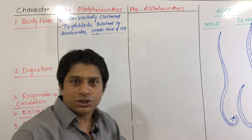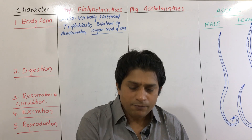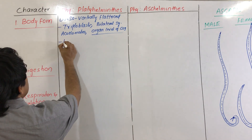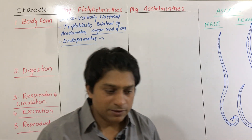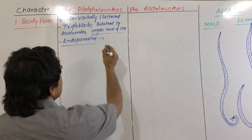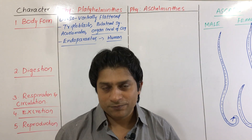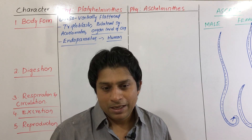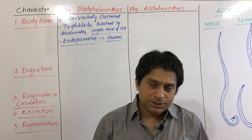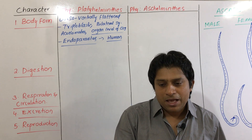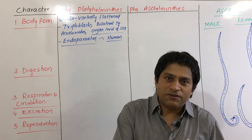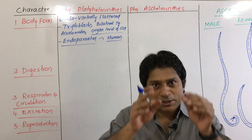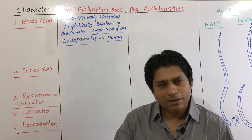Where are these animals found? There are a few free-living forms, but most of these are parasites acting as endoparasites living in animals including humans, mostly in the alimentary canal — called luminal parasites. Because the host has a defense mechanism, the parasite must show specific adaptations to survive inside the host body.